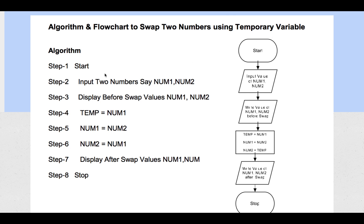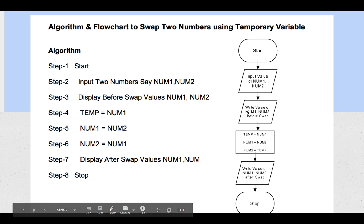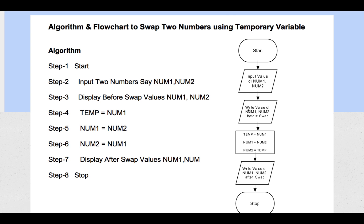In the algorithm: Start, input number one and number two, display the values before swapping, assign number one to temp, assign number two to number one, assign temp to number two — the variables are now swapped. Display number one and number two after swapping, then stop. In the corresponding flowchart, you use the start and end symbols, input/output symbols for the display and input steps, and rectangle symbols for the processing operations.